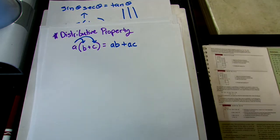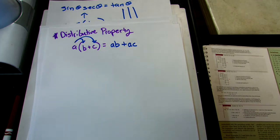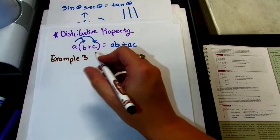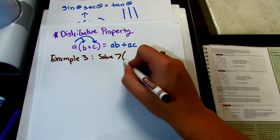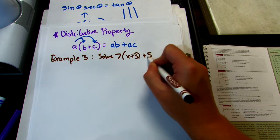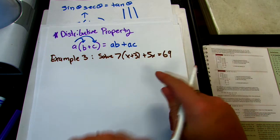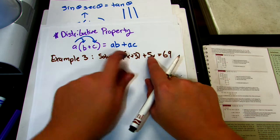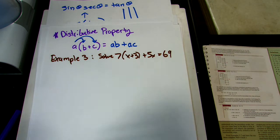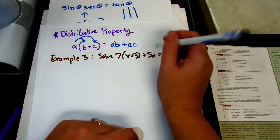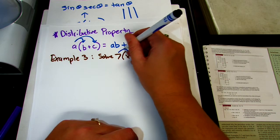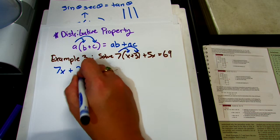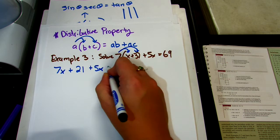Now that we've reviewed the property, let's see it in action. Example 3: solve 7 times the quantity x plus 3, plus 5x equals 69. You might be tempted to just add x and 5x, or even 7x and 5x — you cannot do that. The first thing you have to do is simplify by taking care of the parentheses using the distributive property. We distribute the 7 by multiplication over addition, giving us 7x plus 21, plus 5x equals 69.